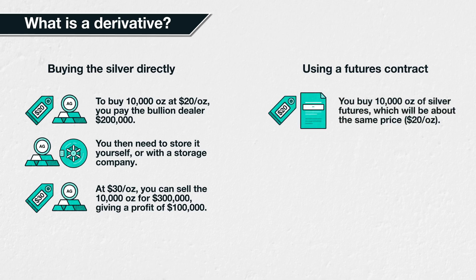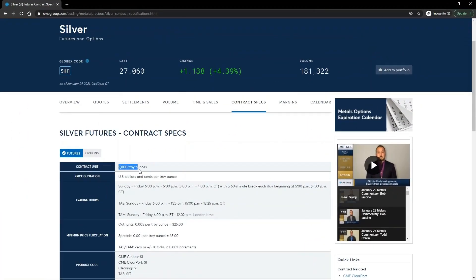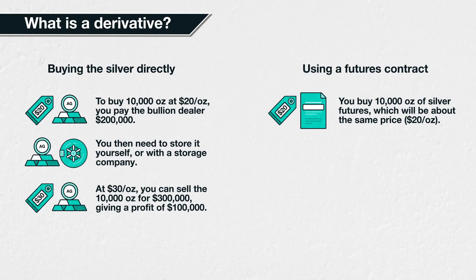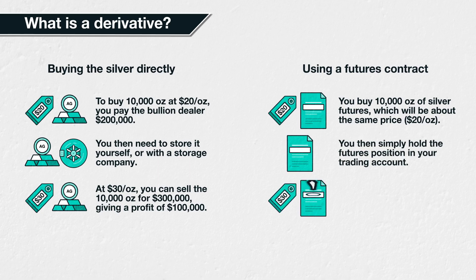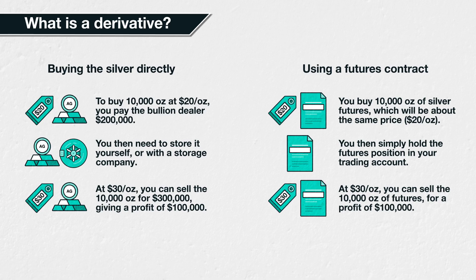A futures contract is an example of a derivative contract you could use. By purchasing a silver futures contract, you are not purchasing the silver itself, but you are entering into a legal agreement to purchase the silver at some future date. These futures contracts will track the price of the underlying asset, which in this case is silver. You're free to sell this futures contract before the contract expires to realise any profits or losses. The CME silver futures contract, for example, represents 5,000 ounces of silver per contract, so instead of purchasing 10,000 ounces of physical silver, you could purchase two CME silver futures contracts. This would give you the same price exposure to 10,000 ounces, and if the price of the silver futures contract then increases to $30 an ounce, you can sell the two futures contracts for $300,000 and will have made a profit of $100,000 again.